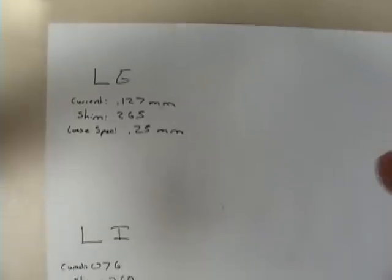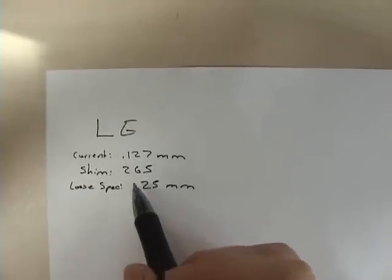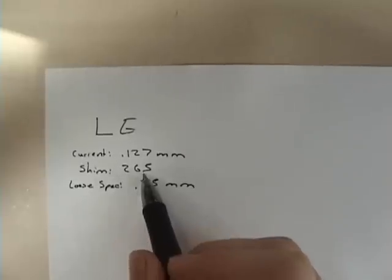My current clearance is .127mm and the shim that I have in there is a .265mm.